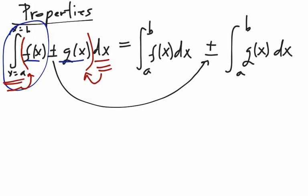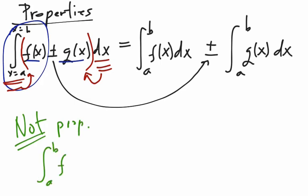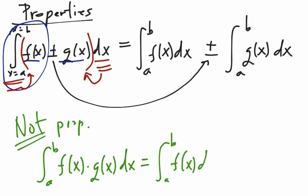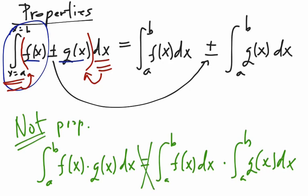The next thing is not a property — do not ever do this. If you have the integral from a to b of f of x times g of x, the temptation is to just multiply the two integrals: the integral of f of x dx times the integral of g of x dx. Do not ever do this. These are not equal.